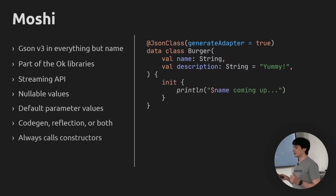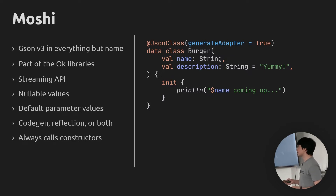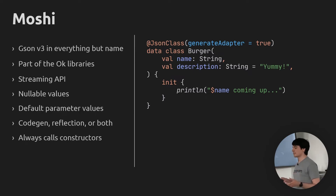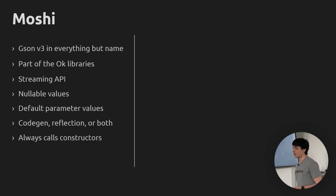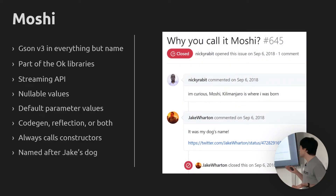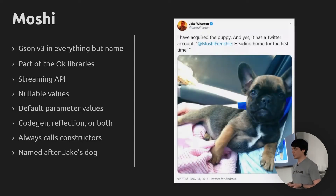Whichever approach you use, it has some really nice properties. For example, Moshi will always invoke constructors — it will never create instances using Java's newInstance API. So if you were doing some side effects in your constructors — which you really shouldn't in your DTOs, but if you did — they would still happen as expected. And as a last bonus point, Moshi is named after a dog that Jake used to have, with a Twitter link and GitHub issue so we can take a moment to appreciate that dog.